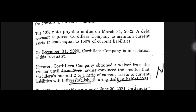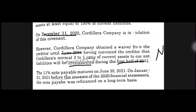Next, we have the 11% note payable, which matures on June 30. On January 31, 2021, before the issuance of the 2020 financial statements, the note payable was refinanced on a long-term basis. The refinancing agreement was completed after the reporting period and before the statements were authorized for issue, so it will be classified as non-current. But this time it is very clear that we should classify this liability as current.